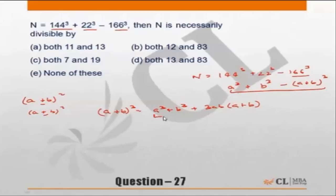So we can say a cube plus b cube is here. Let us transpose a plus b whole cube to the other side, so minus a plus b whole cube. This should be equal to minus 3ab into a plus b.